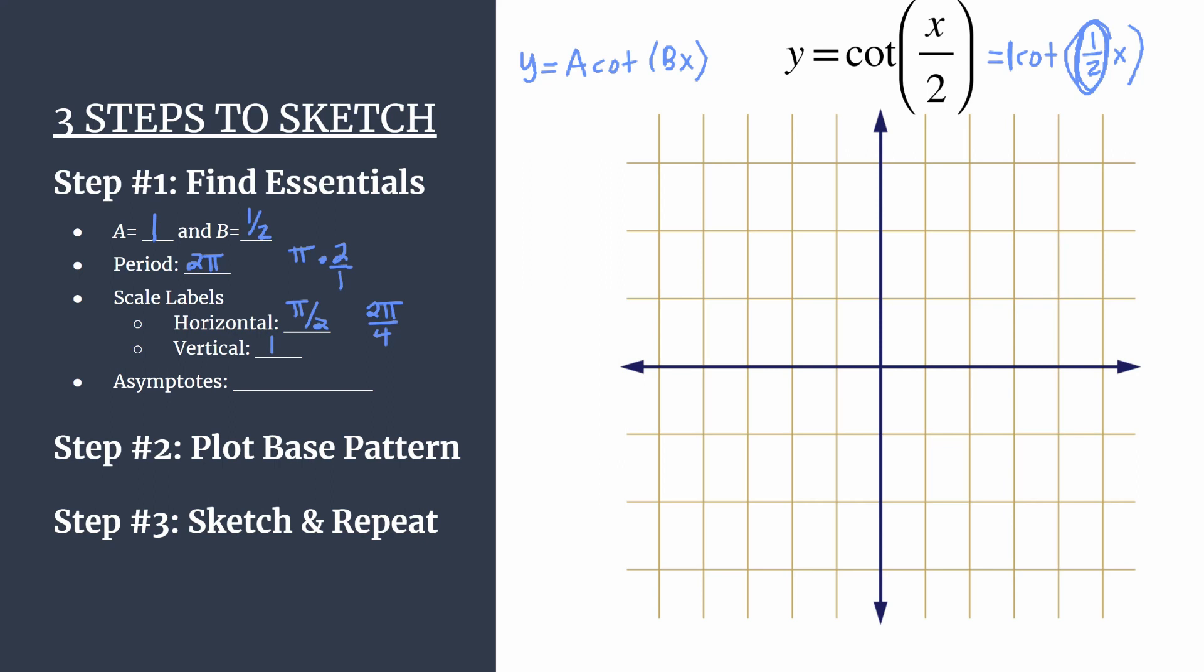Starting with our horizontal axis, count by pi over 2. So 1 pi over 2, 2 pi over 2, 3 pi over 2, 4 pi over 2, 5 pi over 2. And we can label in the negative direction as well, all the same values, just with those negative signs. And let's label our vertical axis as well, counting by ones. So we have a really nice grid set up here.